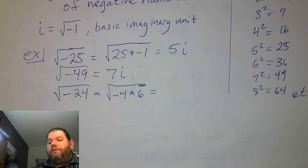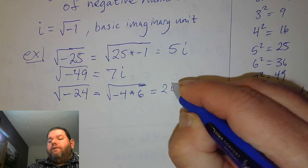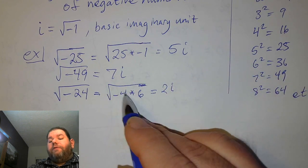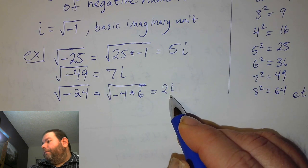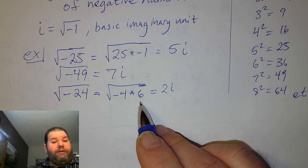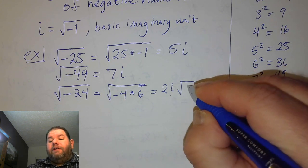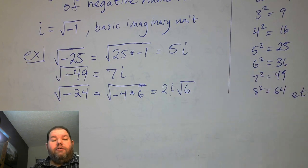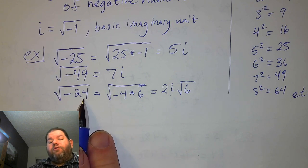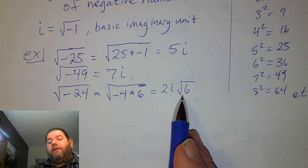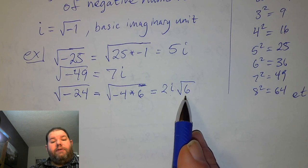The answer is 2i. The square root of negative 4 becomes 2i. We can't do anything else with the 6, so the 6 stays under the square root. So the square root of negative 24 is expressed as 2i times the square root of 6.